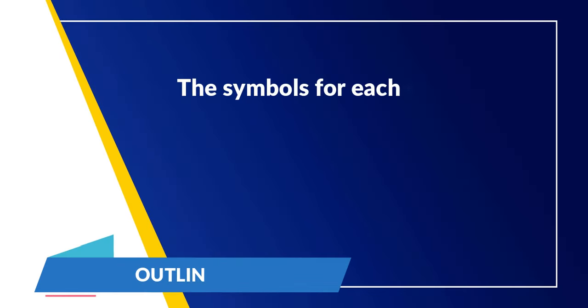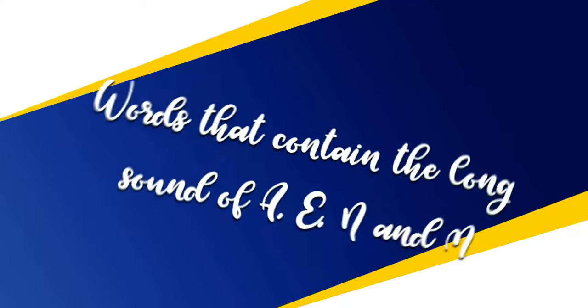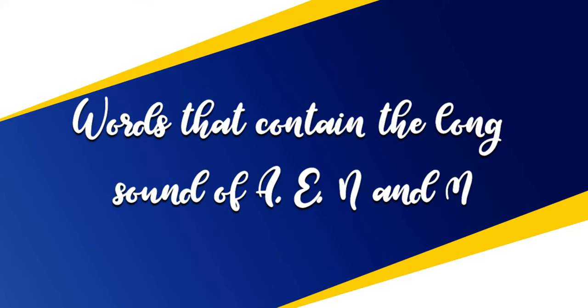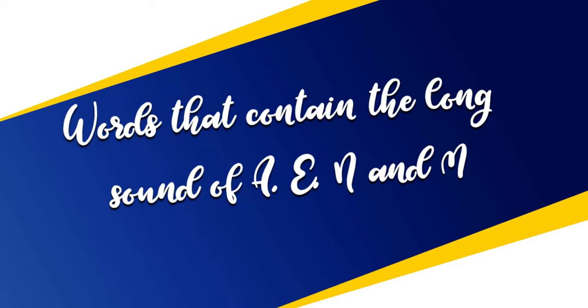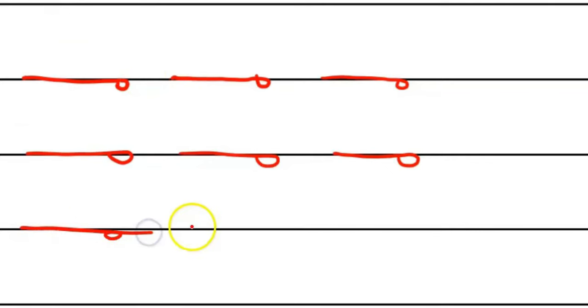The symbols for each sound in a word are joined together to form a word called an outline. The following words contain the long sound of A, E, N, and M. For example, 'me' is written M-E. Next, 'may' is M-A.